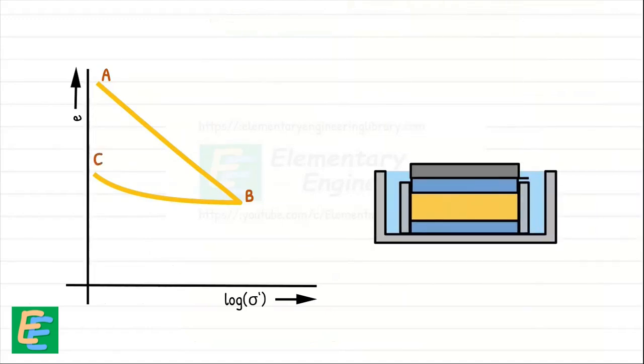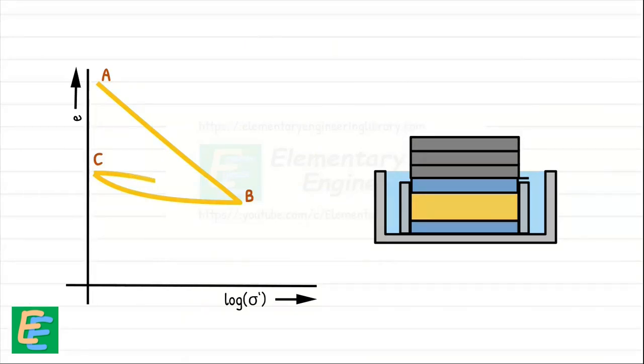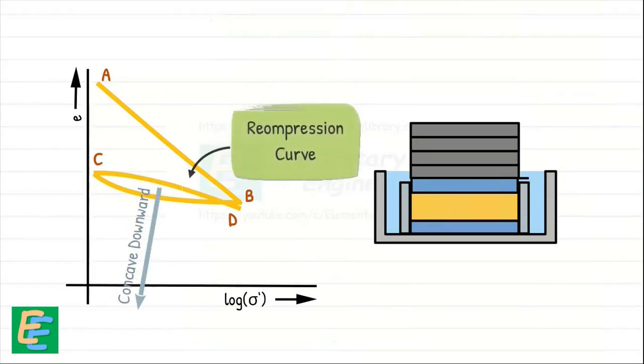Now if we reload the soil sample that has swelled to point C, this process creates a new curve. And as we increase the load, the curvature of the curve reverses direction. As the load approaches the maximum load that was experienced by the sample at point B, the curve merges with the original compression curve AB at point D. This new curve has concavity downward and is called the recompression curve.